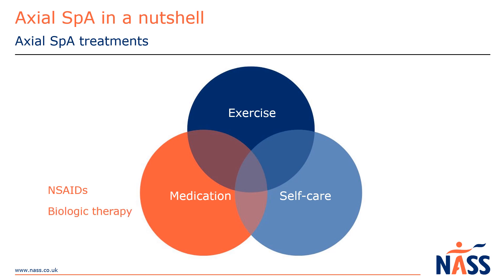Biologic therapies are prescribed by rheumatologists and can be helpful if someone either doesn't feel enough benefit from NSAIDs or they're experiencing side effects. Biologics aim to stop the body from producing the inflammation in the first place, and we have a free guide to biologic therapy you can download from our website.